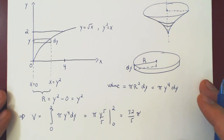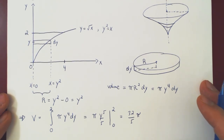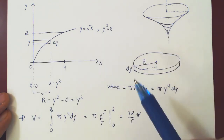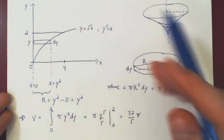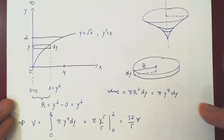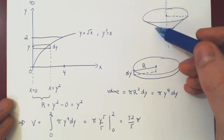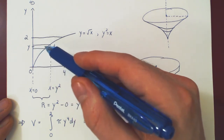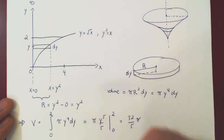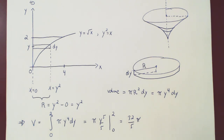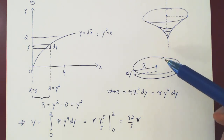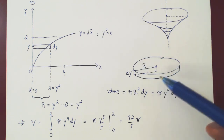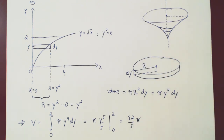In our next video, we will consider this exact same problem — the same region, the same axis of revolution — but instead of using a horizontal rectangle, we will use a vertical rectangle. Hopefully, even though we have a different little solid, we will obtain the same volume.